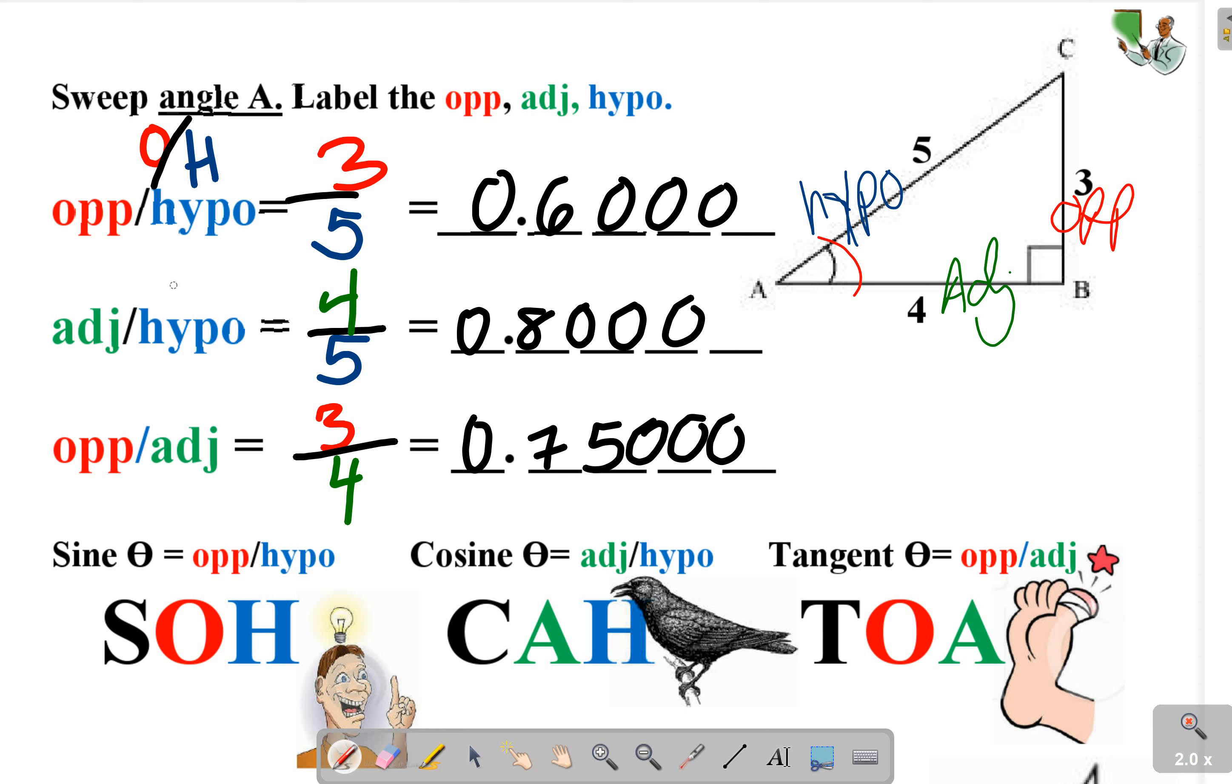These three ratios - opposite over hypotenuse, adjacent over hypotenuse, opposite over adjacent - they have a name. The names are sine, cosine, and tangent.